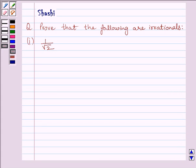Hello and welcome to the session. I am Shashi and I am going to help you with the following question. The question is, prove that the following are irrationals. First part is 1 upon root 2.